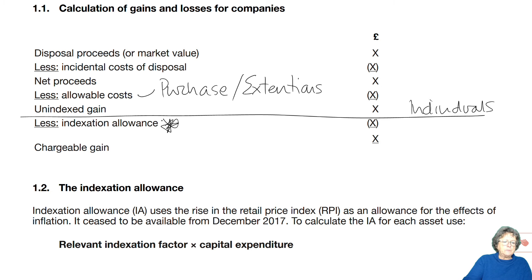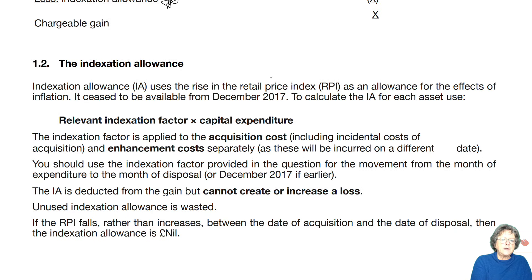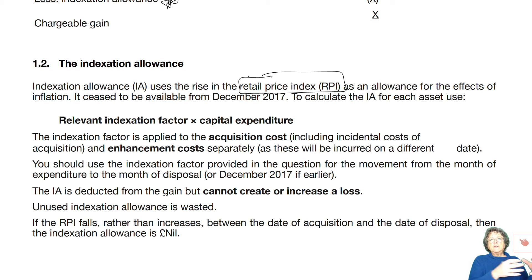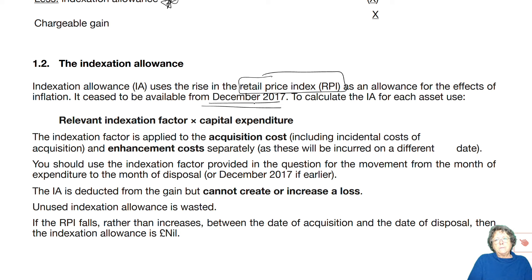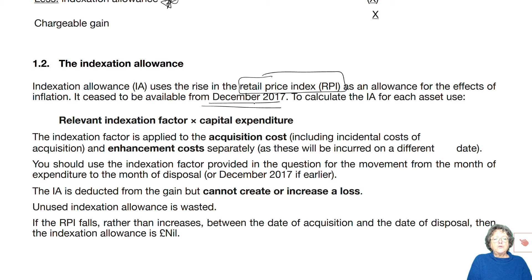Indexation allowance uses the retail prices index as a means of combating inflation. You apply this factor to the original cost, which may be several years ago, bringing that cost up to date with inflation so that you're comparing like with like. It did end in December 2017, so be careful if details are given afterwards — it looks like they've stopped doing that and all indexation details will end on December 2017. But please be aware you may get an asset sold up till 2024 or 2023, so just be aware of that.